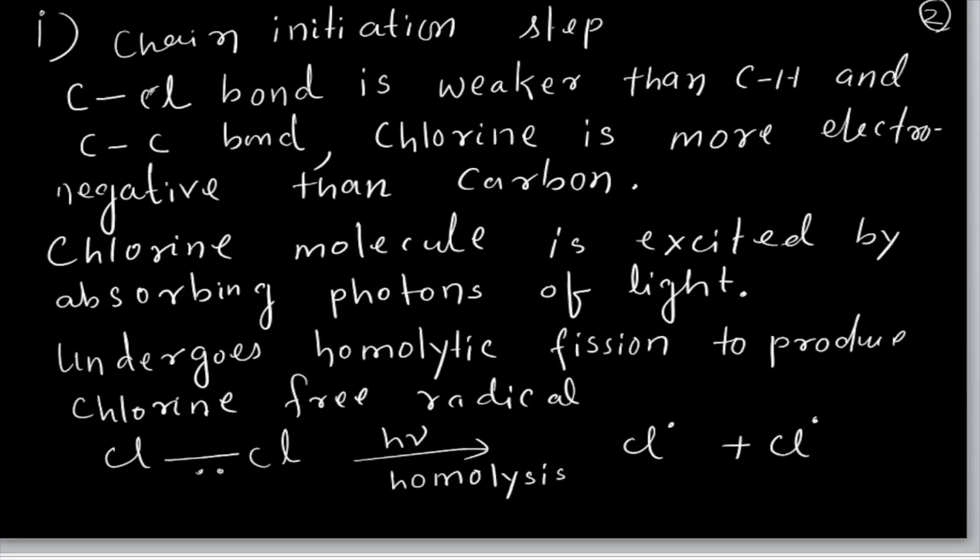In the steps of the reaction, the first one is known as the chain initiation step. The Cl–Cl bond — you know chlorine is attached; there is a Cl–Cl bond and also C–H bonds (3 C–H bonds). The Cl–Cl bond is also a covalent bond. The question is: the Cl–Cl bond will break — can it or not? The Cl–Cl bond is weaker than C–H and C–C bonds because chlorine is more electronegative than carbon. That is why the bond can break.